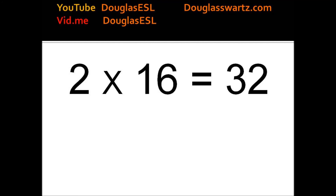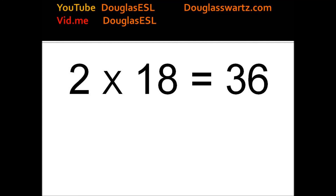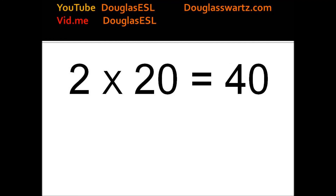2 times 16 equals 32. 2 times 17 equals 34. 2 times 18 equals 36. 2 times 19 equals 38. 2 times 20 equals 40. 2 times 21 equals 42.